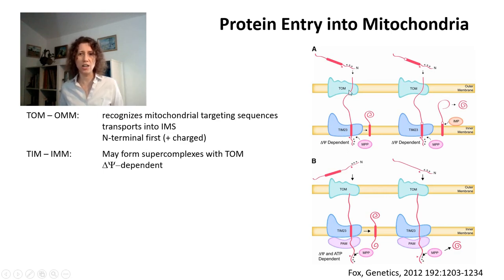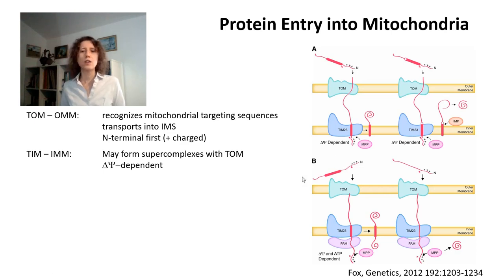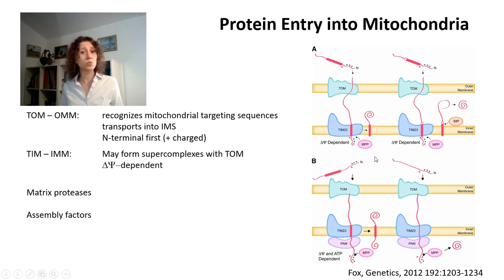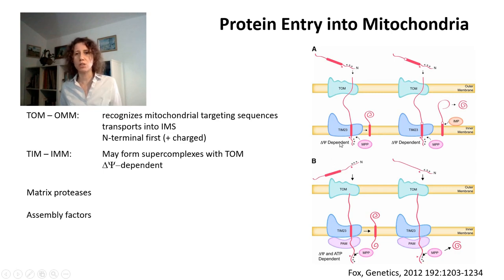TIM transports proteins into mitochondria, dependent on the inner mitochondrial membrane potential, which attracts the positive charge of the N-terminal of this unfolded protein. Within mitochondria, each protein has a different story in terms of how it's further processed. Matrix proteases cleave target sequences, and different assembly factors exist. Proteins may be exported to the intermembrane space or inserted into the inner mitochondrial membrane. Basically, TIM and TOM bring most of the proteins into mitochondria.